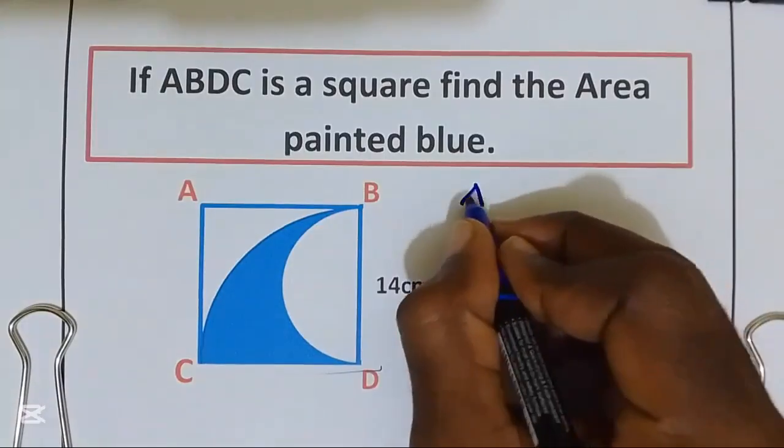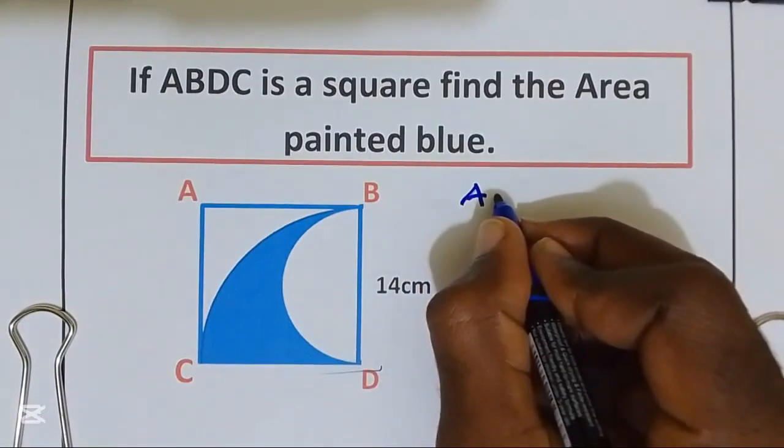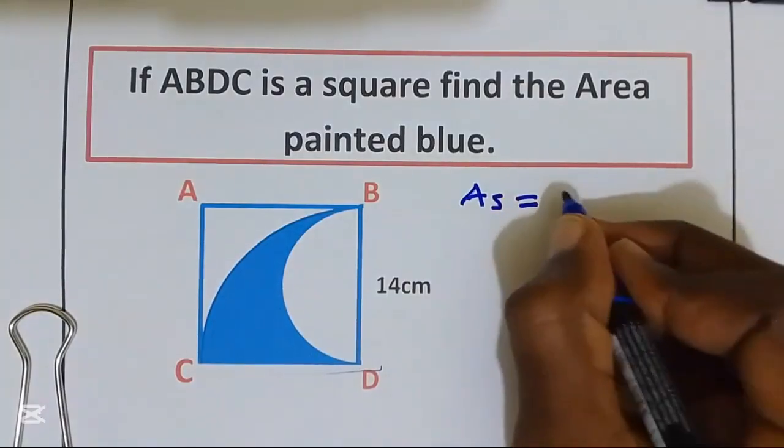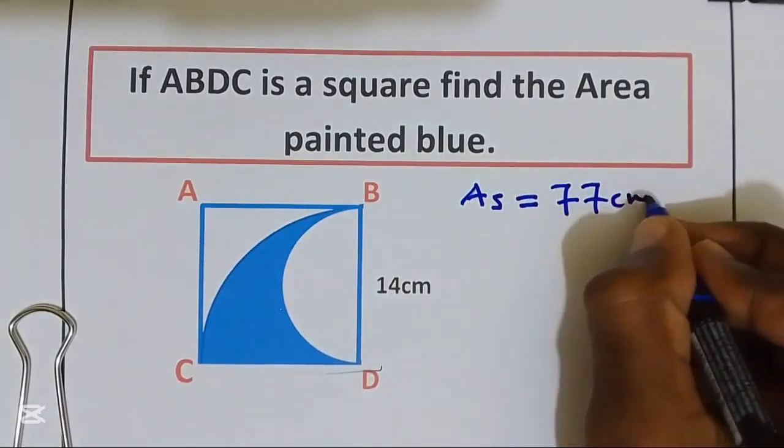So, area painted blue, that is area shaded, is equal to 77 cm squared.